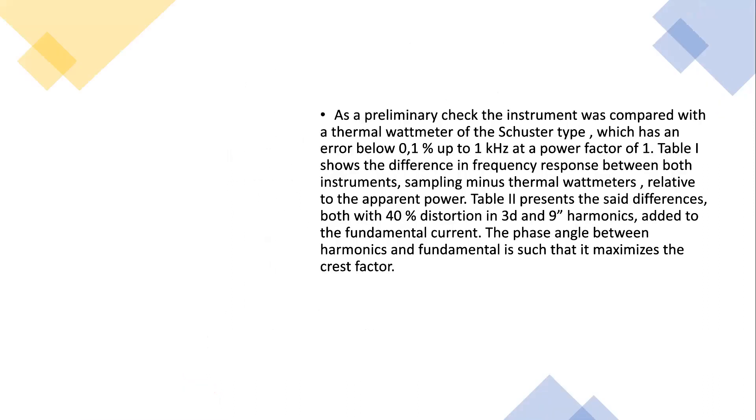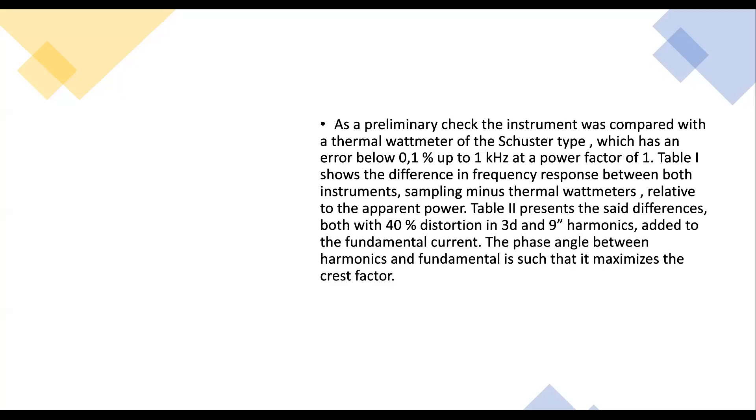As a preliminary check, the instrument was compared with a thermal wattmeter of the Schuster type which has an error below 0.1% up to 1 kHz at a power factor of 1. Table 1 shows the difference in frequency response between both instruments, sampling minus thermal wattmeter, relative to the apparent power. Table 2 presents results with 40% distortion in 3rd and 9th harmonics added to the fundamental current. The phase angle between harmonics and fundamental is such that it maximizes the crest factor.